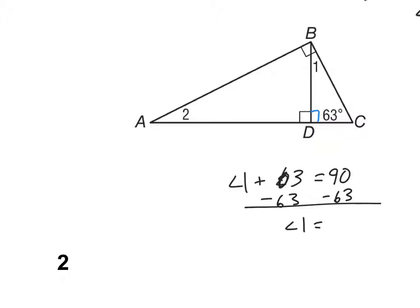Subtracting 63 from both sides gives angle 1 equals 27 degrees. The interesting thing about this problem is that because this angle and this angle add up to 90, I also know that the corresponding angles in the larger triangle add up to 90 as well. That angle is also 90 degrees.